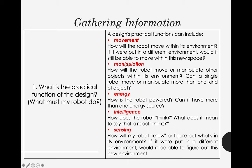For the manipulation part, how will the robot move or manipulate other objects within its environment? Can a single robot move or manipulate more than one kind of object? For example, if your robot is designed to look for trash and put it inside its body, you need to identify what the angle or position or structure of your robot should be so that it can easily get the trash.